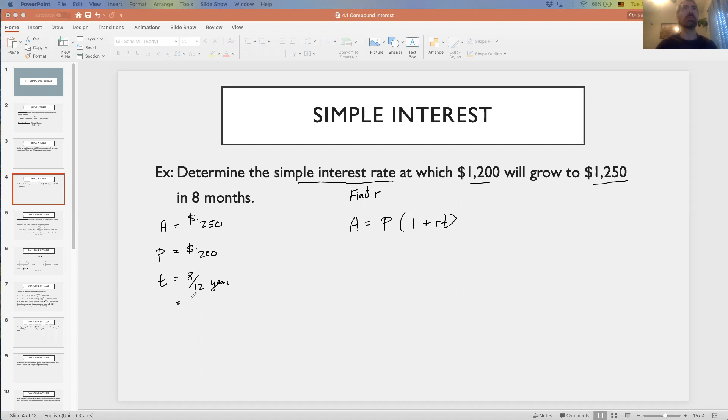I'm going to leave this as eight twelfths of a year. You could reduce this to two-thirds. The reason I'm saying to leave that as a fraction is because two-thirds is 0.6666 repeating, a non-terminating decimal. If you rounded that to 0.67, you're truncating - you're going to get a truncation error in your final answer. It's better to leave it as a fraction, because that's an exact number, as opposed to rounding it.